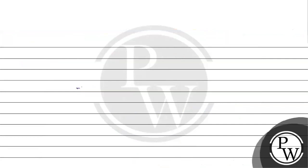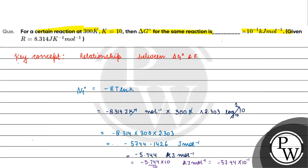We have minus 57.44. Rounding off, we get minus 57 into 10 raised to the power minus 1 kilojoule per mole. This is the final answer for this question. I hope you understood it well.